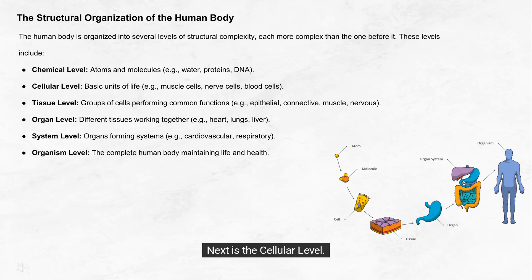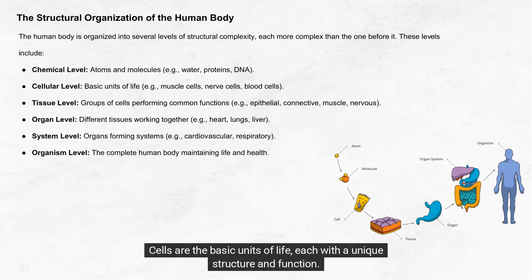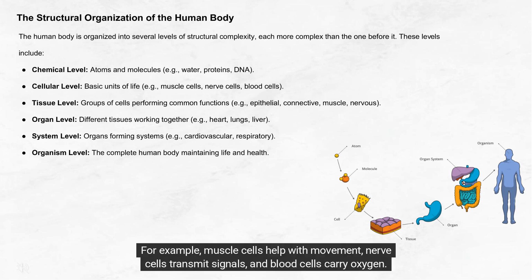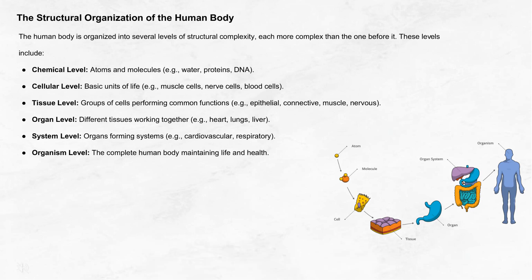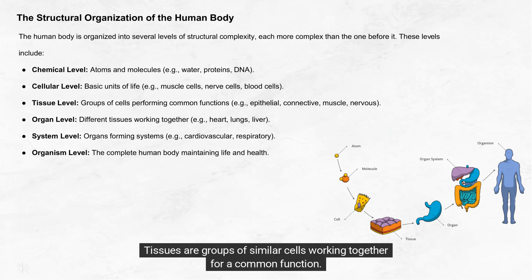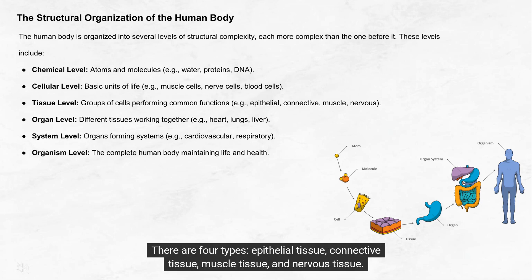Next is the cellular level. Cells are the basic units of life, each with a unique structure and function. For example, muscle cells help with movement, nerve cells transmit signals, and blood cells carry oxygen. Then we have the tissue level. Tissues are groups of similar cells working together for a common function. There are four types: epithelial tissue, connective tissue, muscle tissue, and nervous tissue.